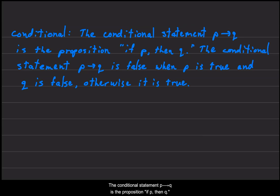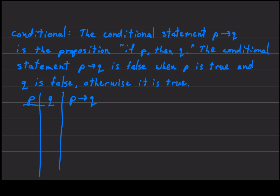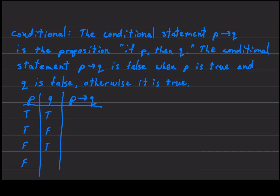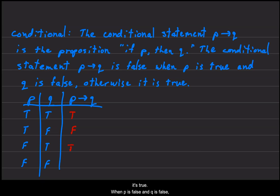Conditional. The conditional statement P then Q is the proposition 'if P then Q'. It is false when P is true and Q is false; otherwise, it is true. Looking at the truth table: when P is true and Q is true, it's true. When P is true and Q is false, it's false — that is the only false case. When P is false and Q is true, it's true. When P is false and Q is false, it's true.